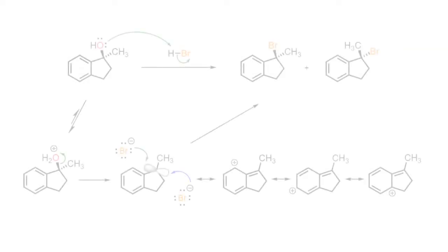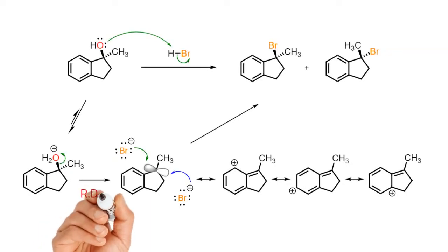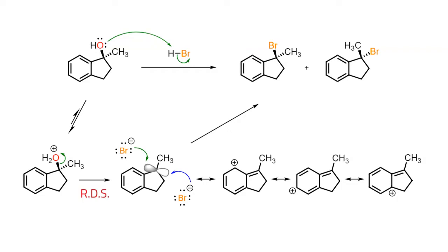The pathway involves a fast proton transfer to the alcohol to set up a good leaving group, which then breaks away in the rate determining step. The carbocation formed is stabilised by extensive delocalisation across the molecule. Even though several of the carbons in the system are electrophilic, the bromide nucleophile only attaches to the benzylic carbon in order to reform the stable benzene ring.